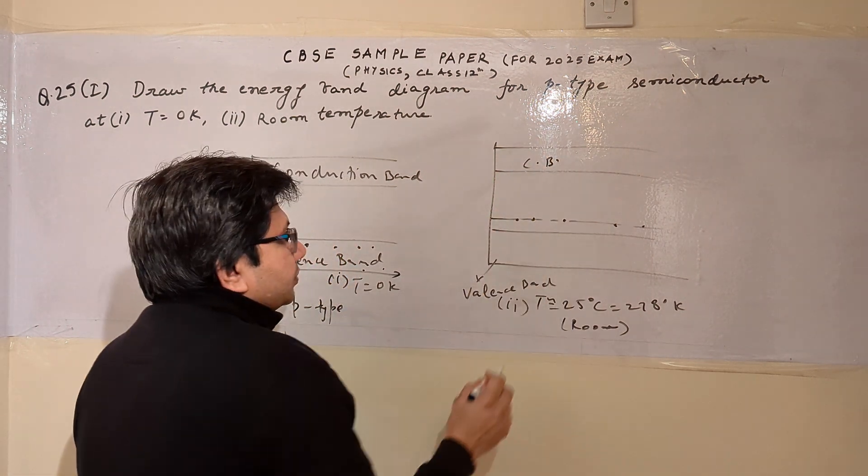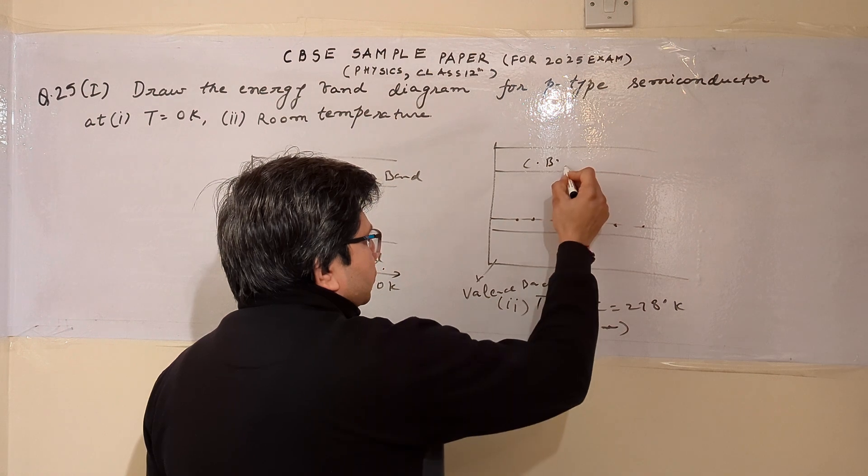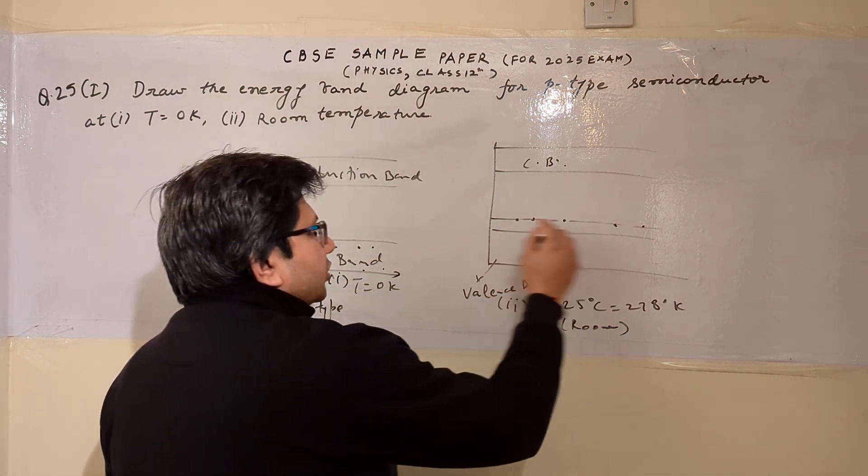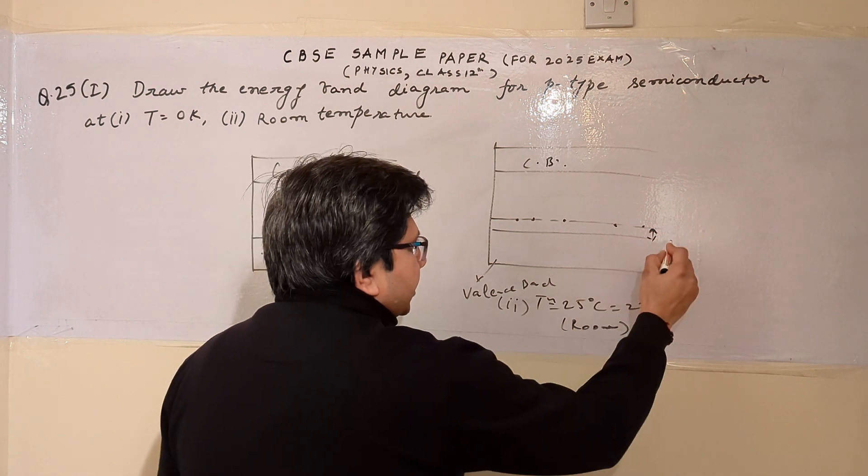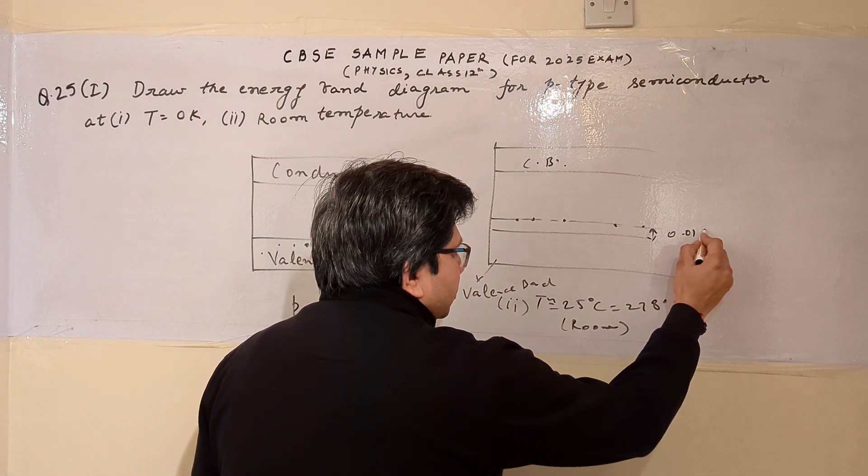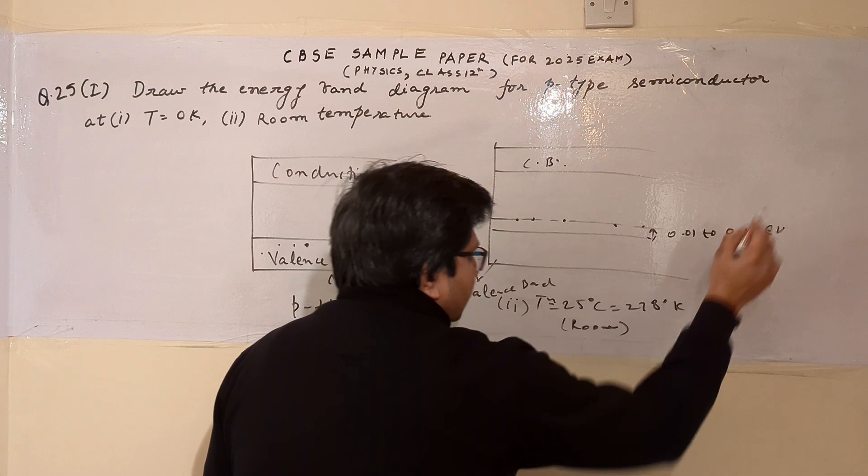And here is the conduction band. Some of them go, very few go to the conduction band, but most of them are at this particular level, which is nearly equal to 0.01 to 0.05 electron volts.